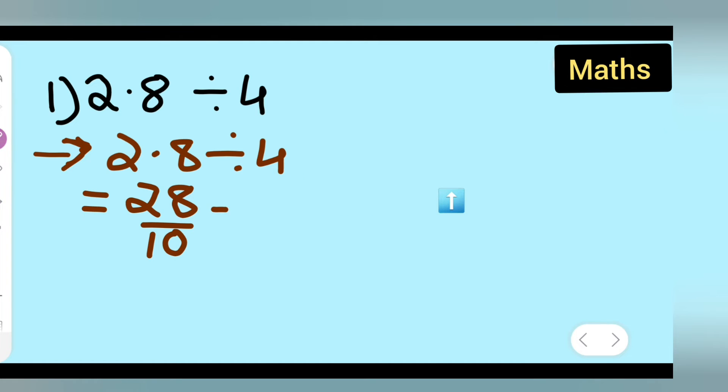First, divide it by 4, write it down, and then follow the steps. 28 upon 10, multiply it with the reciprocal of 4. The reciprocal of 4 is 1 upon 4.